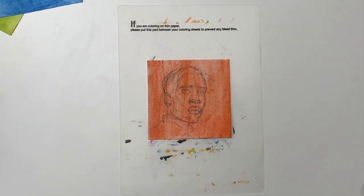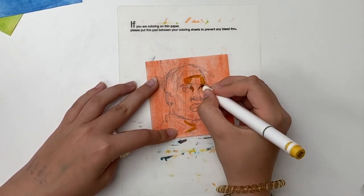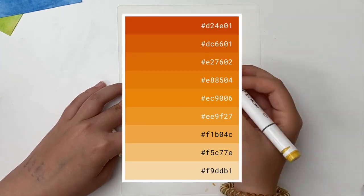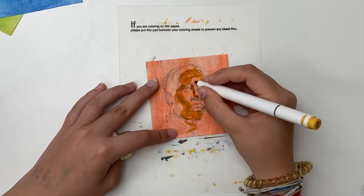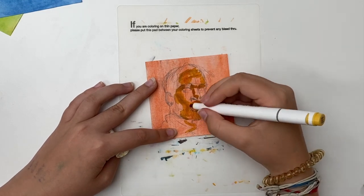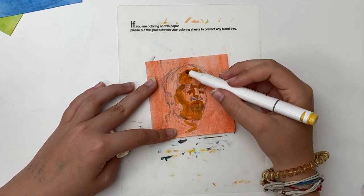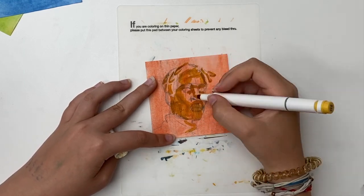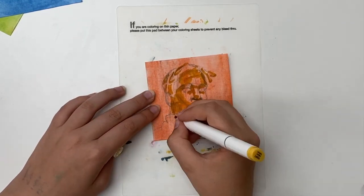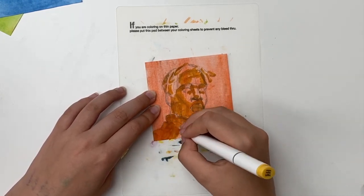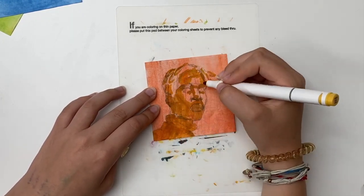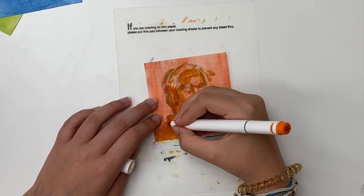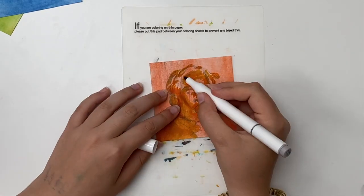I prepared my little mat for the Ohuhu markers, which you always need so you can't get your desk dirty. I started in with the yellows because yellow is the lightest shade of orange, and just went over most of the face except the highlights. I found out that the yellow is darker than the actual paper color, so I just left the highlights in the paper color.